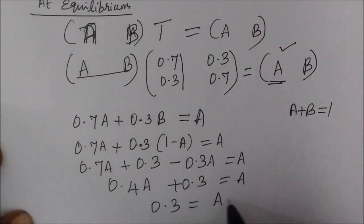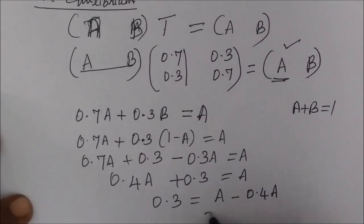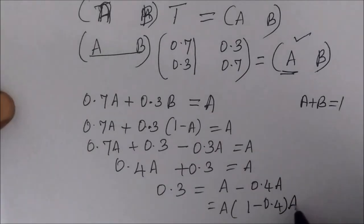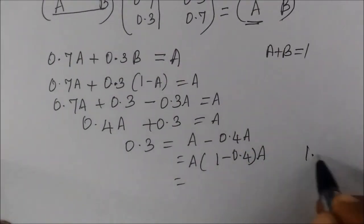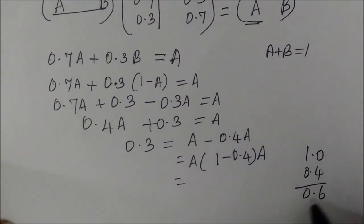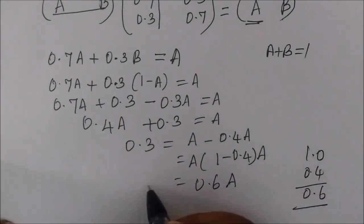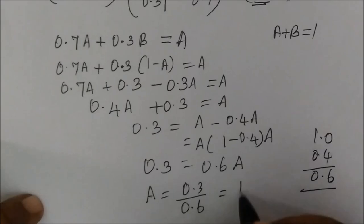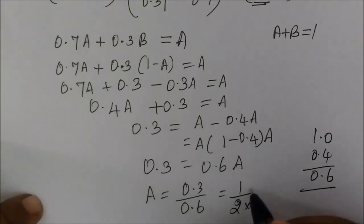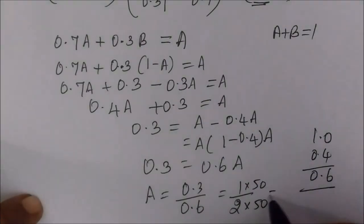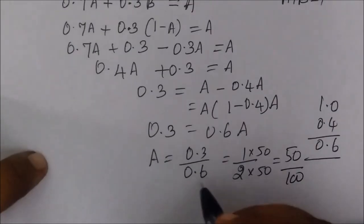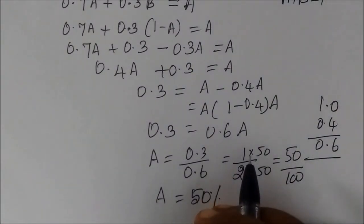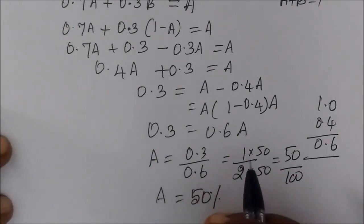Therefore, 0.3 equals a minus 0.4a, which is 0.6a equals 0.3. So a equals 0.3 divided by 0.6, which is 0.5 — that is one half. Multiplying by 100, a equals 50%. So in the long run, 50% are using the Transit system.